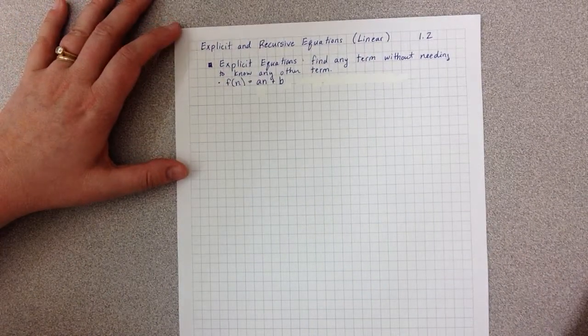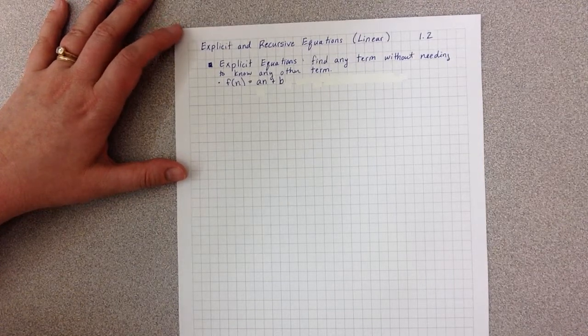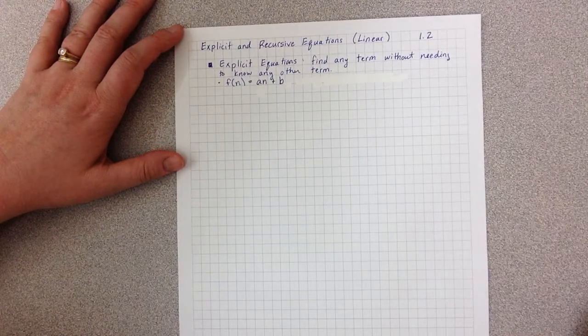The notes for this are on the explicit and recursive equations. We're looking at just the linear kind right now, and this is what's covered in section 1.2.